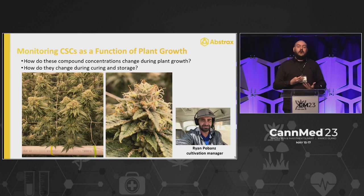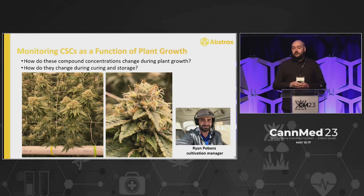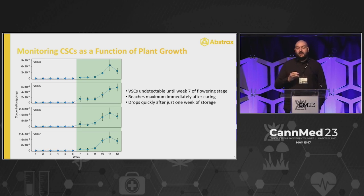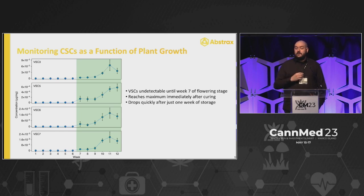We also wanted to know how these compounds change as a function of plant growth — are they present throughout, do they increase during different stages, and how do they change during curing and storage? We conducted an in-house grow trial using Gelato with our cultivation manager Ryan. All volatile sulfur compounds weren't really detectable until about week 7 of flowering — and we only monitored during flowering. They didn't reach a large, noticeable concentration until about weeks 10 and 11, when we started the drying process. Then from weeks 11 to 12 — one week after storage in a traditional mason jar — we saw huge decreases in the majority of these volatile sulfur compounds, including prenylmercaptan.